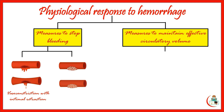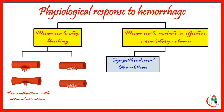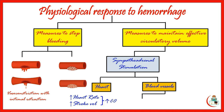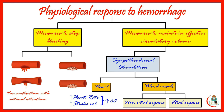By direct effect on the heart, there is increased heart rate and increased contractility, causing increased stroke volume and therefore increased cardiac output. Increased sympathetic stimulation of blood vessels leads to vasoconstriction of non-vital organ vessels such as the skin, muscle, kidneys, and gut, resulting in oliguria, hyperpnea, nausea, and vomiting. The blood vessels of vital organs such as the brain and heart escape this vasoconstriction, maintaining blood flow to these vital organs.